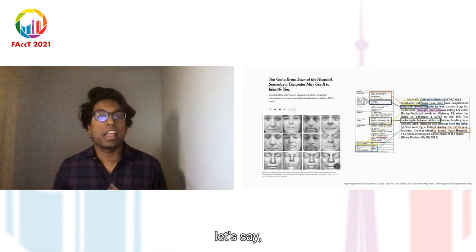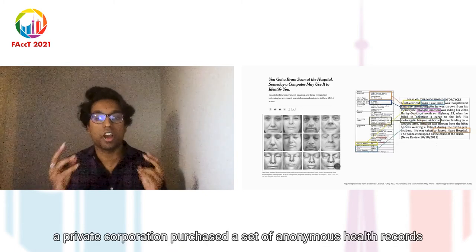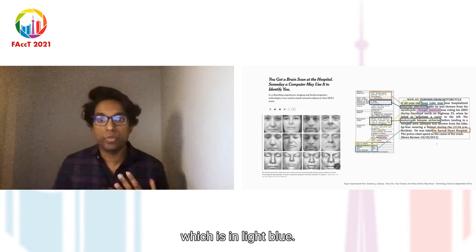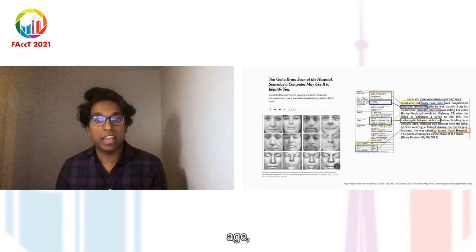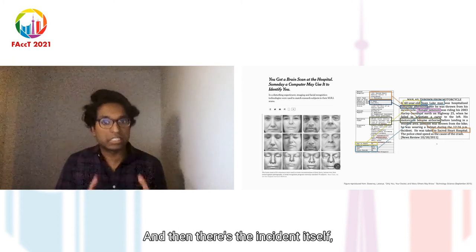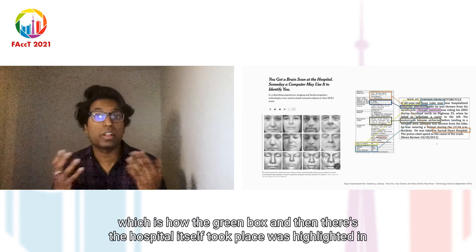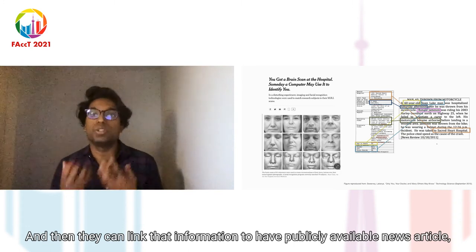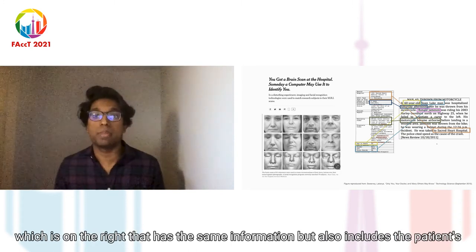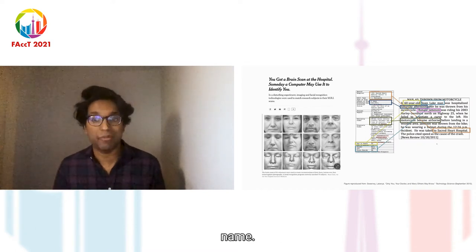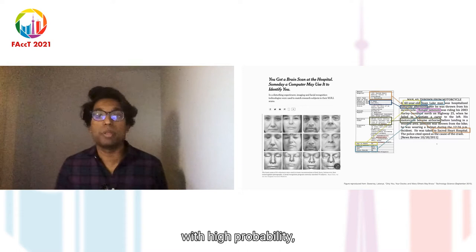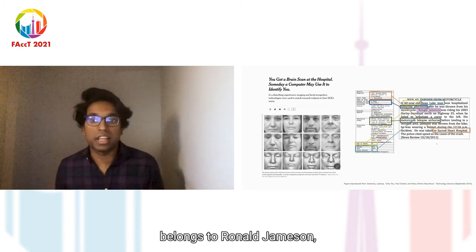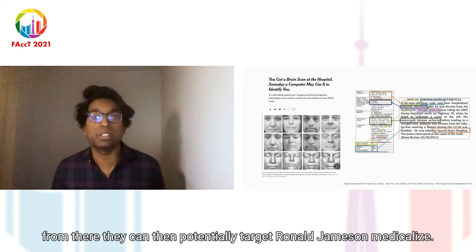Another example is: let's say a private corporation purchased a set of anonymized health records with attributes such as gender, age, the incident itself, and the hospital where it took place. They can then link that information to a publicly available news article that has the same information but also includes the patient's name. And so now with high probability, the corporation can say that this anonymized healthcare record belongs to Ronald Jameson, and from there they can potentially target him with medical ads.